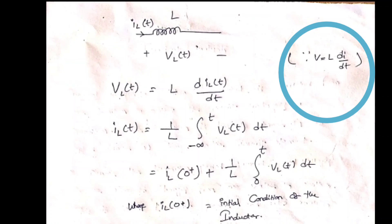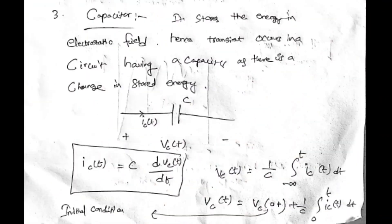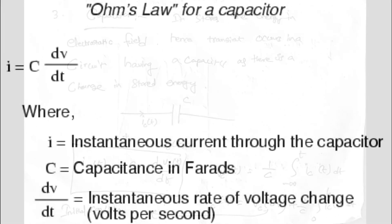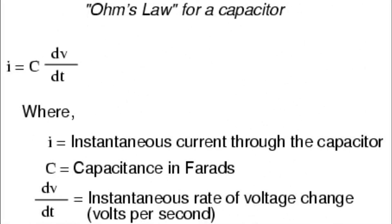Transients also appear due to the capacitor. The capacitor stores energy in the form of an electrostatic electric field; since energy is already stored, transients will appear. Assume a capacitor connected to a DC voltage source. The current through the capacitor is i_C(t), and the capacitor equation is: i_C(t) = C × dv/dt.